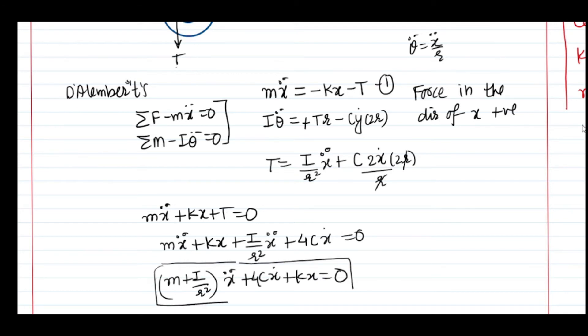This is the governing equation of the system with damping. The first term (M + I/R²) represents the equivalent mass, 4c is the equivalent damping coefficient, and k is the equivalent stiffness. This completes the first half of the problem using the D'Alembert principle. We will now move towards the energy principle and derive the entire expression again.